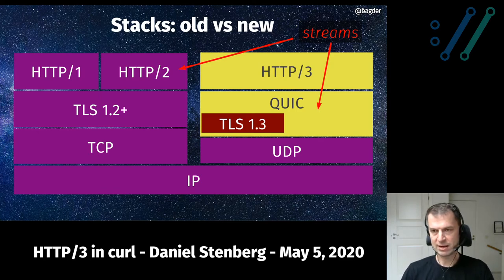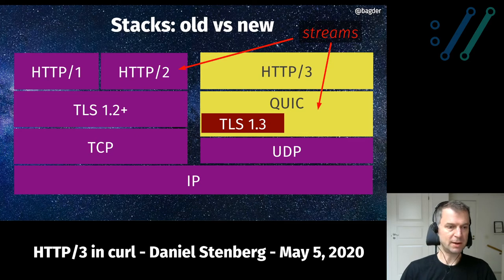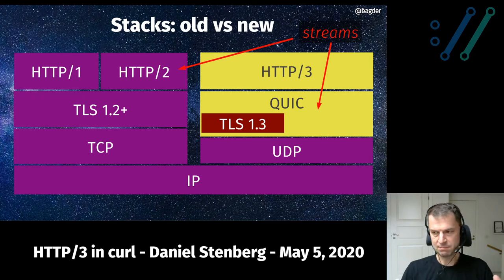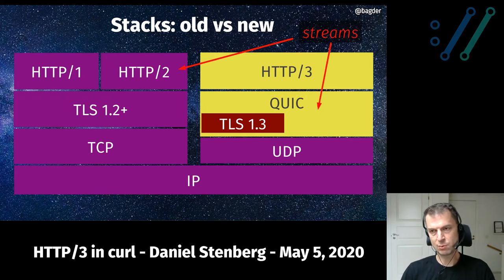For an HTTP/3 user like curl, we don't really care about QUIC the way we don't really care about TCP — we care about the transport protocols. For us it might not matter much, but for the world it will matter because other protocols can also run on top of QUIC and automatically get streams. The key mindset is that UDP and QUIC underneath HTTP/3 affects everything.